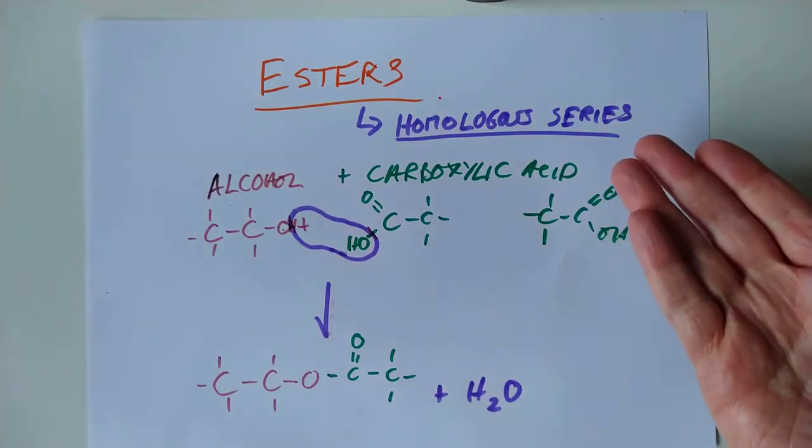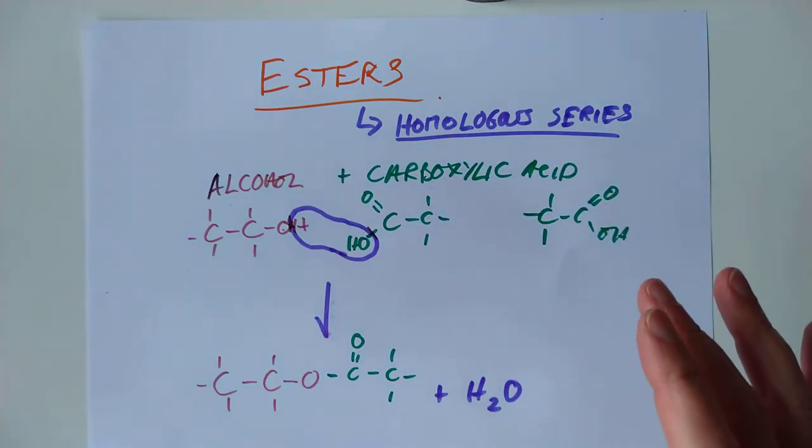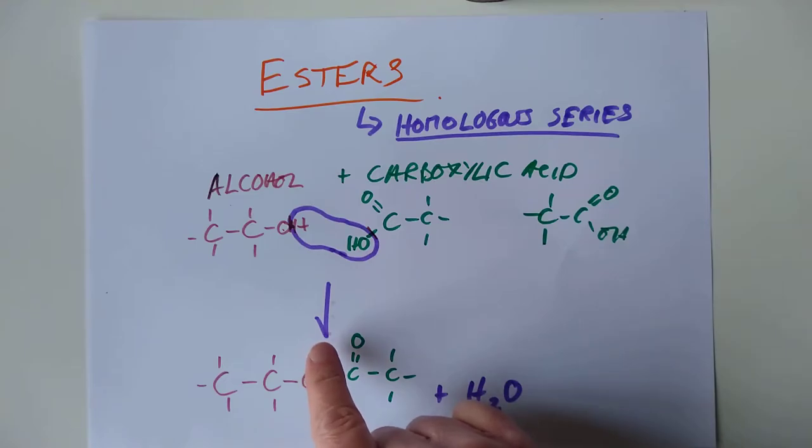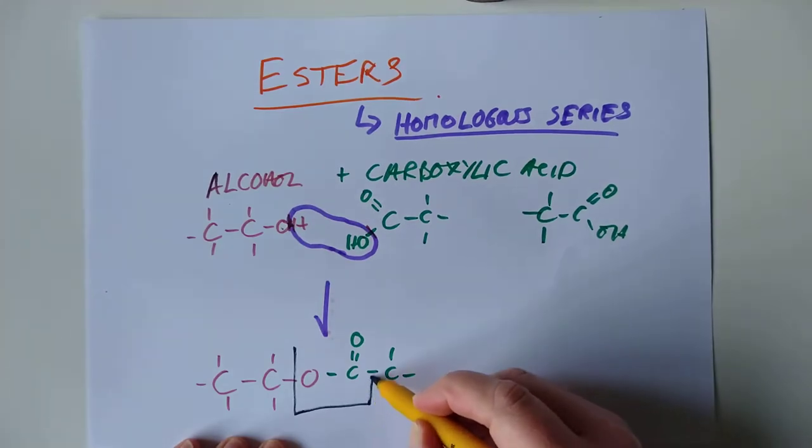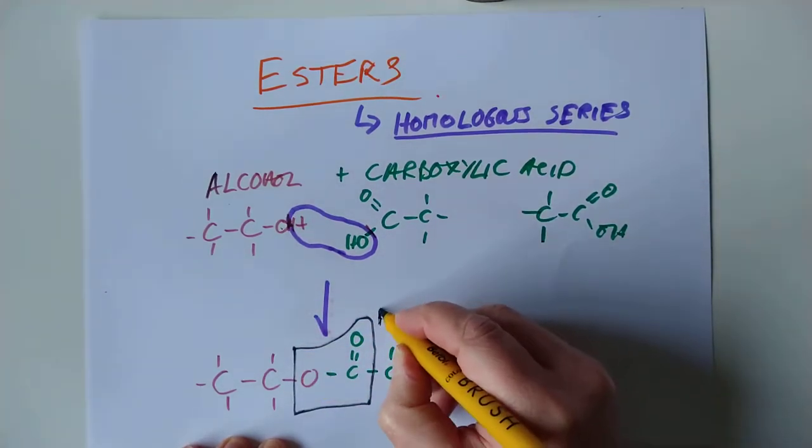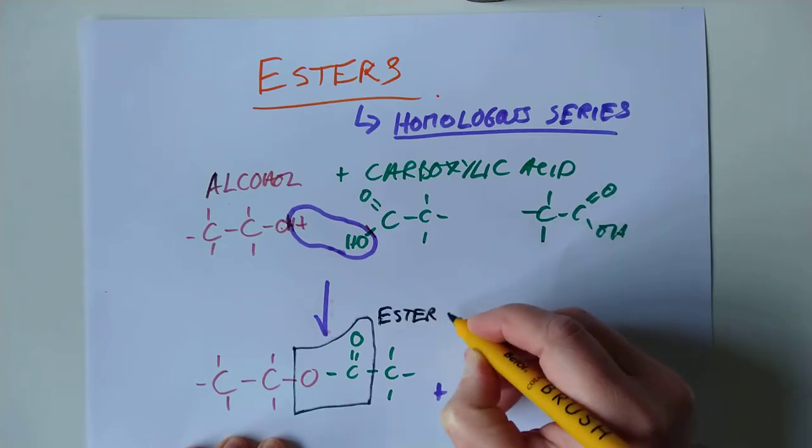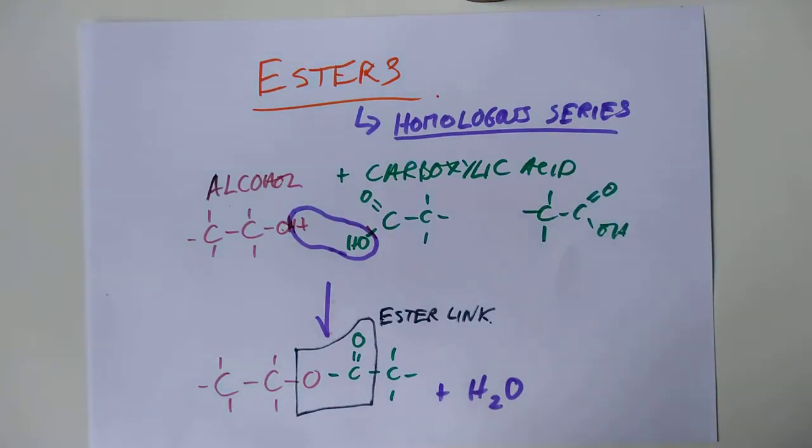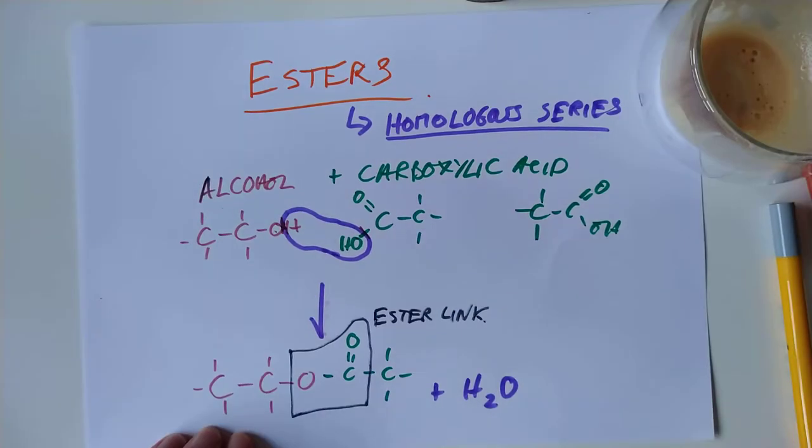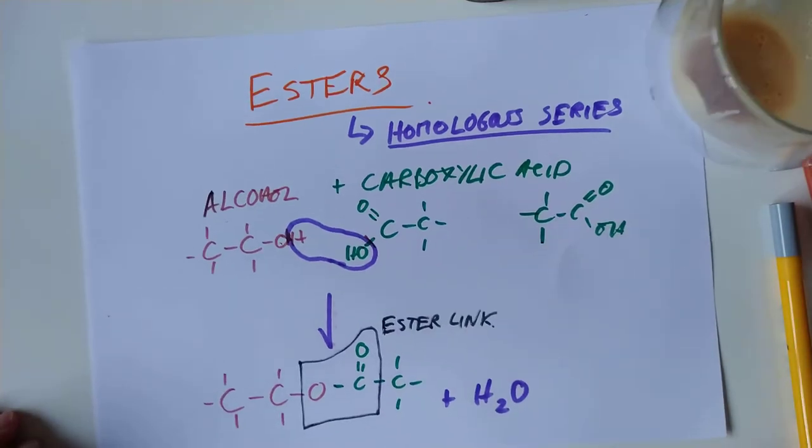If it's a homologous series, it must have, or all the members of this family must have a few things in common. I have not made a mistake with this, by the way, with this arrow. We'll come back to that in the very near future. As I was saying, if it is a member of a homologous series, they need to have a functional group, a way you can recognise them, simply by looking at them. And the functional group of esters, it's this chunk in the centre here, known as the ester link. And that's how you make them. It's very simple.